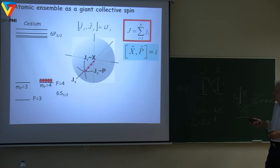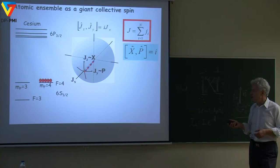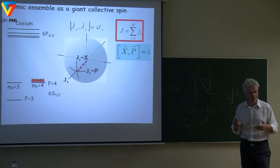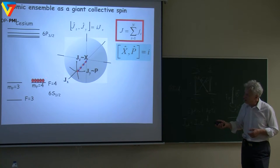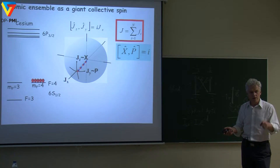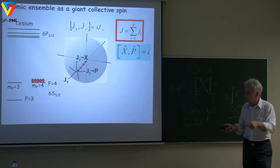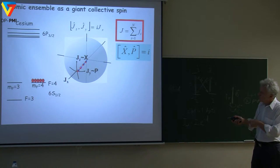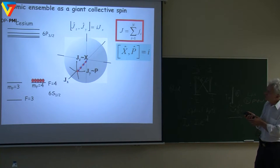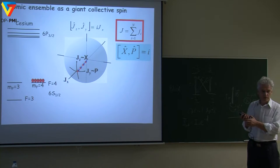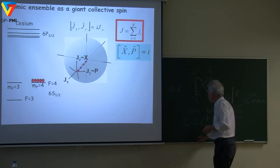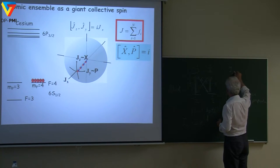On the Bloch sphere, if I have N atoms — and N can be 100 million or 10¹², really a lot — and I optically prepare them all in one substate, that means they are all oriented in one direction along the quantization axis. This macroscopic spin is equal to the spin projection of a single atom times the number of atoms. You should recall that the three components of spin obey a commutation relation: the commutator of Jx and Jy equals i times Jz.